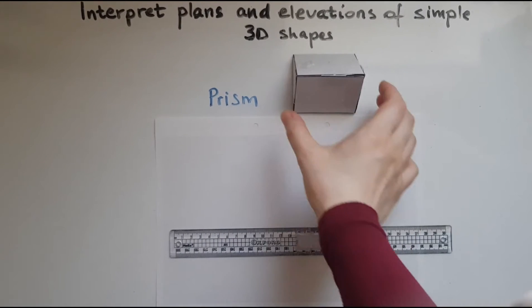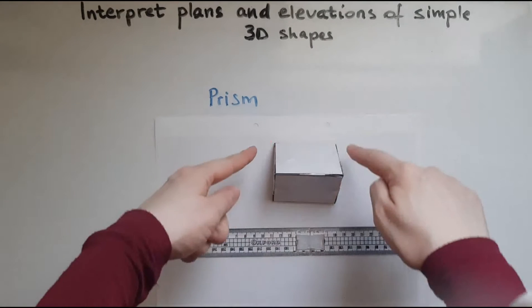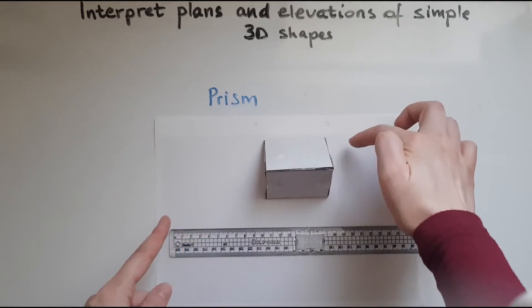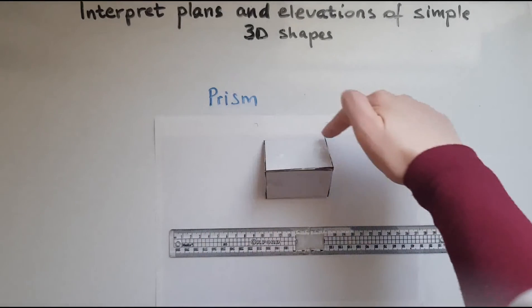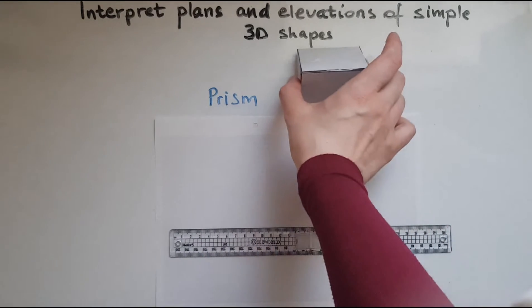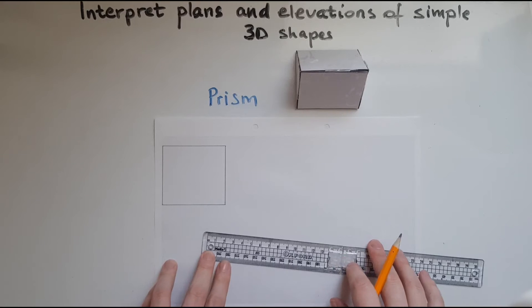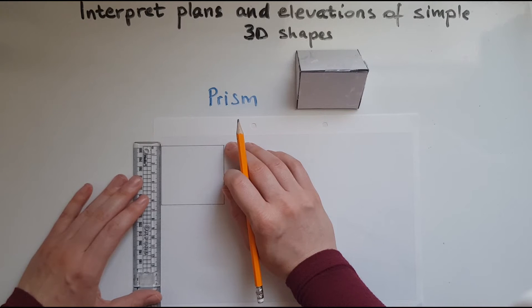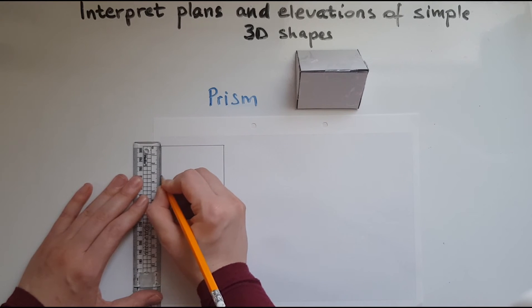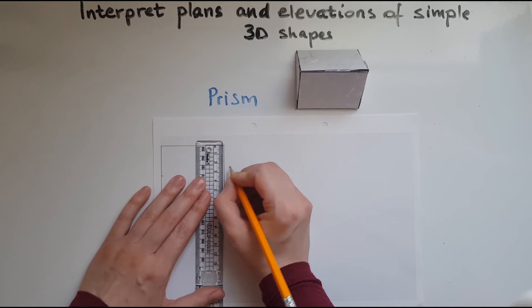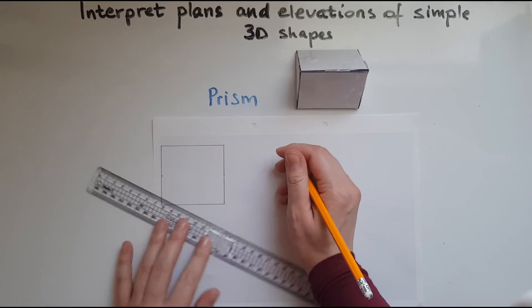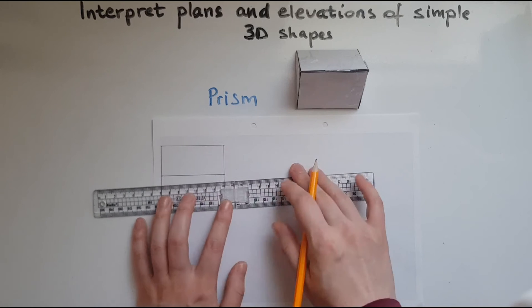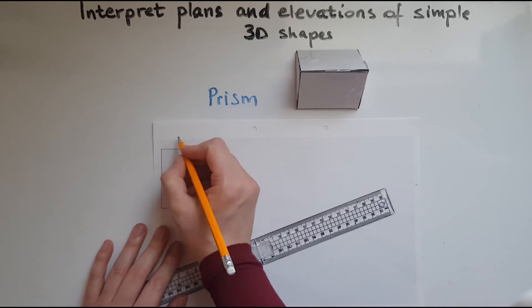We'll now look at the prism. From the top, what we can see is a rectangle which has a line through the middle. I've checked the dimensions and it's seven centimetres by 6.4. So we'll draw the rectangle first, then the line goes in the middle. This was 6.4, so 3.2 is halfway through, and 3.2 on the other side as well. Joining these two dots gives us the line in the middle. So this is the plan.